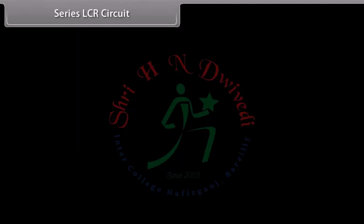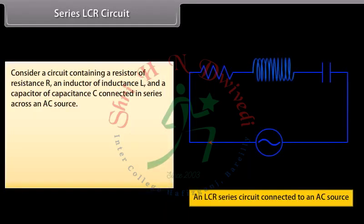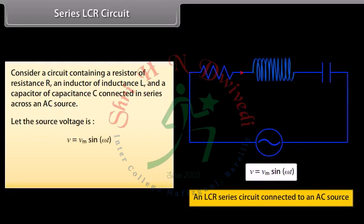Series LCR circuit: consider a circuit containing a resistor of resistance R, an inductor of inductance L, and a capacitor of capacitance C, connected in series across an AC source. Let the source voltage be V equals Vm sin(ωt).